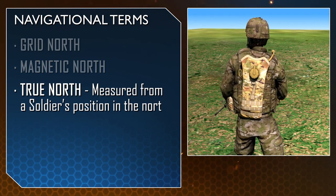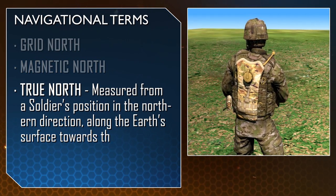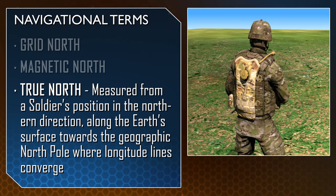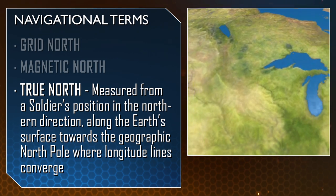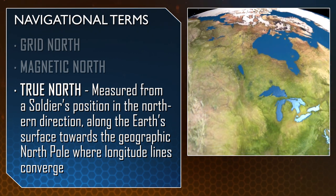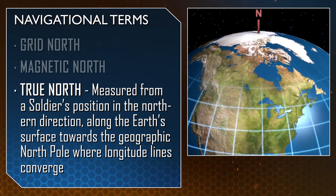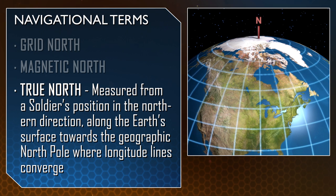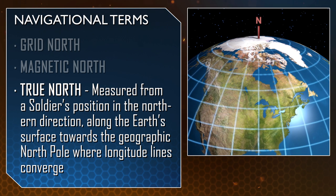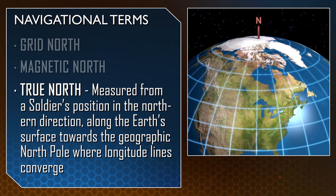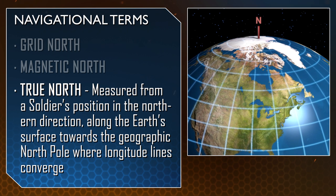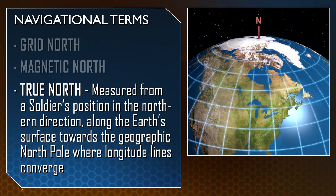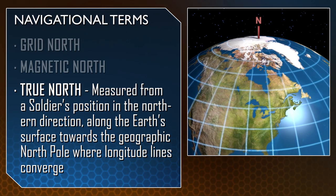True north is measured from a soldier's position in the northern direction along the Earth's surface toward the geographic north pole where longitude lines converge. Depending on a soldier's physical location on Earth, the difference between true north and magnetic north will change.